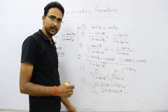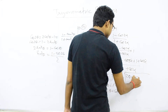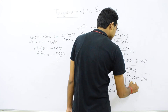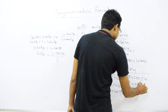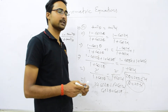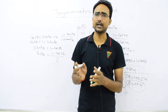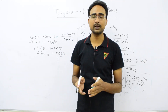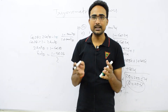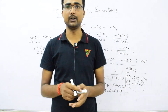We have cos 2θ = cos 2α, the same result as before. So 2θ = 2nπ ± 2α, giving θ = nπ ± α. This is the general solution for tan²θ = tan²α. So for all three cases — sin²θ = sin²α, cos²θ = cos²α, and tan²θ = tan²α — the general solution is θ = nπ ± α.